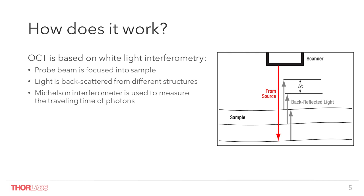There is a time gap between their arrival times, and basically that's what we are using. Since we're talking about light and light is quite fast, we need a clever approach for the time-of-flight analysis — and this is interferometry. We compare the light from the sample with a reference, and this interferometric detection scheme also helps us achieve the great sensitivity that distinguishes OCT and allows us to detect even the faintest features.